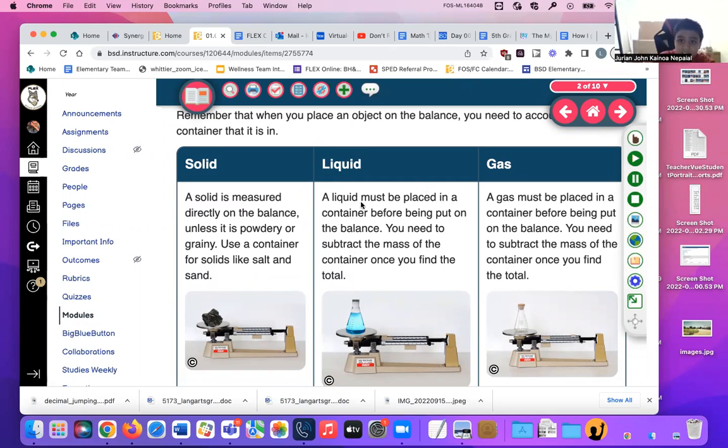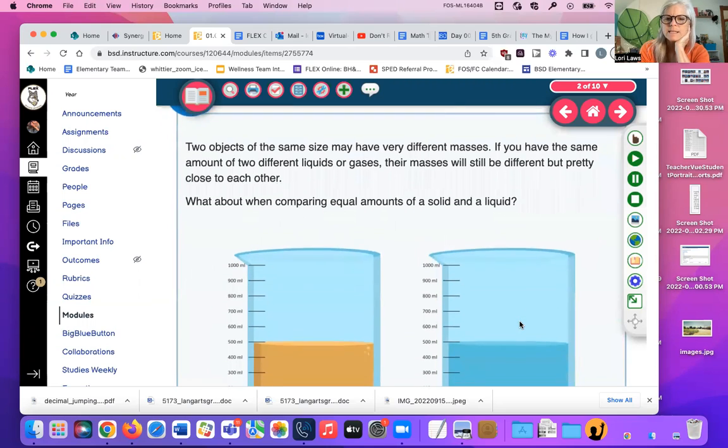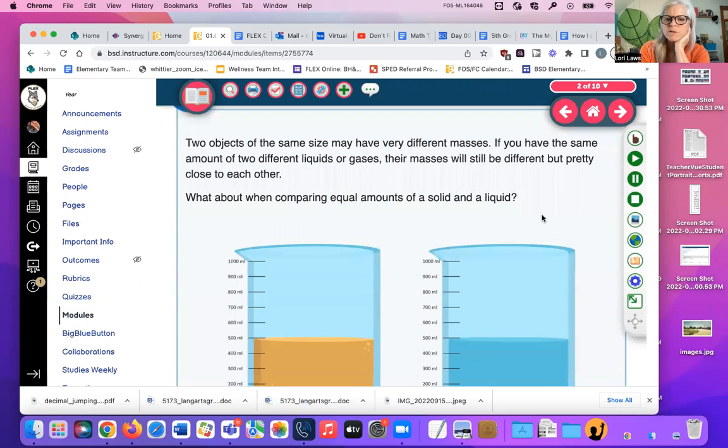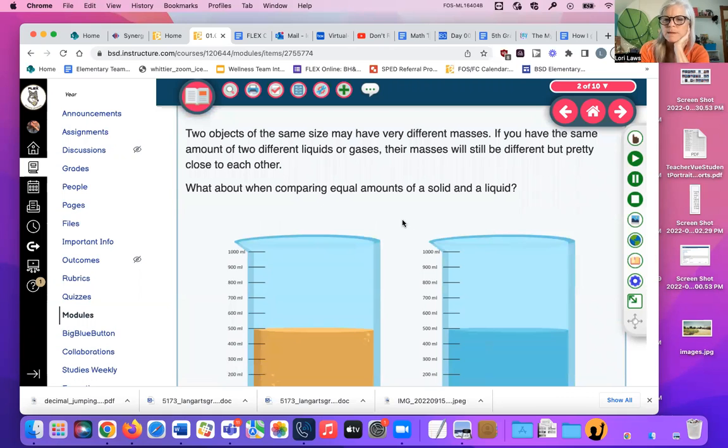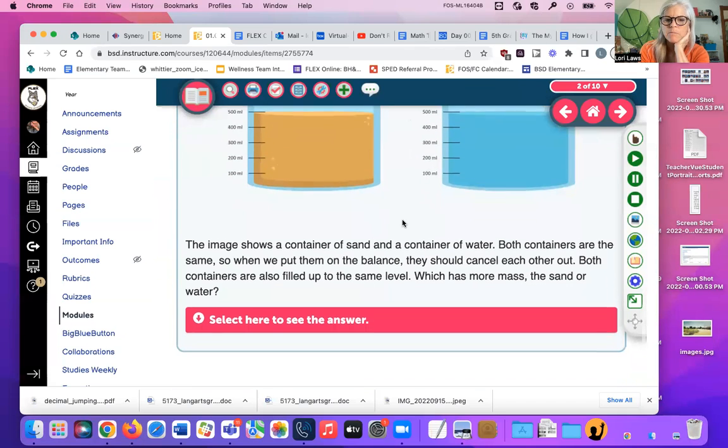So solids, liquids, and gases. If you're measuring a solid, it's easy. You just stick it on there. If it's a liquid, it's in a container and you have to take away the mass of the container before you and subtract it from the total mass. If it's gas, it must be placed in a container too, and you're going to have to hold on to it because if you don't have it in a container, where does the gas go? It just shoots out, doesn't it? Into the air. Two objects of the same size may have very different masses.